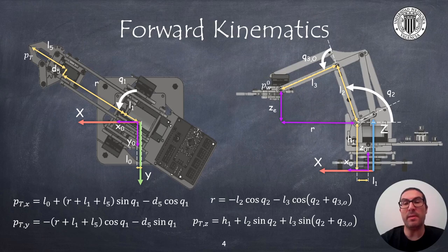The forward kinematics are used to compute the position of the robot gripper from joint angles. To compute the gripper position in x and y coordinates, we first need to compute the distance r.